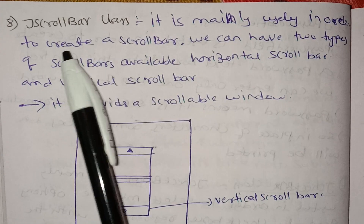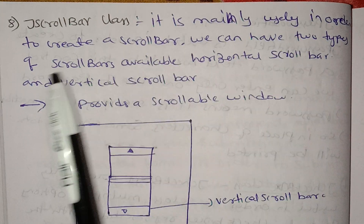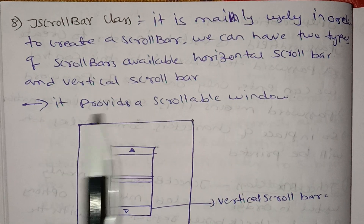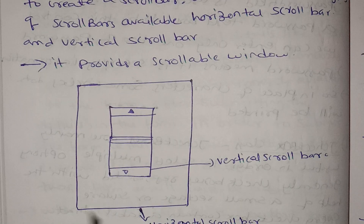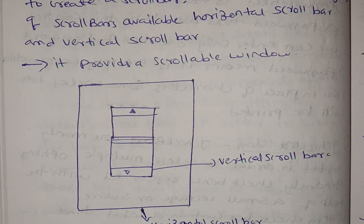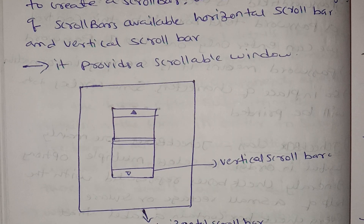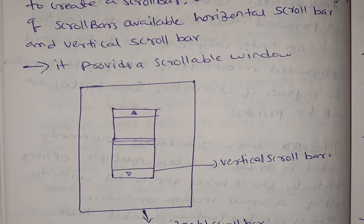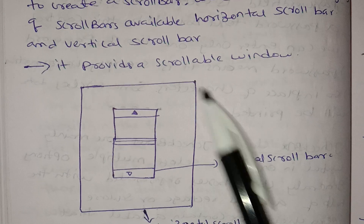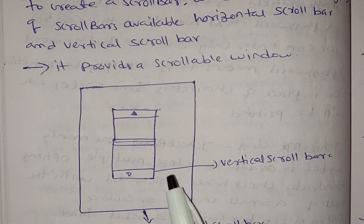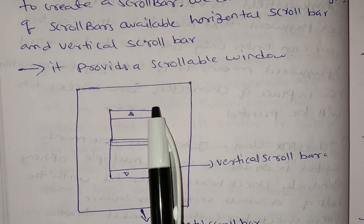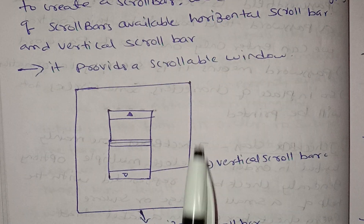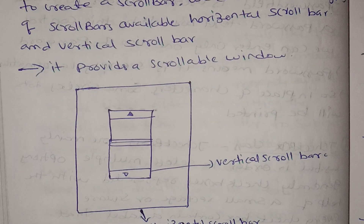Now, the JScrollBar class. It is mainly useful in order to create a scroll bar. We can have two types of scroll bars: a horizontal scroll bar and a vertical scroll bar. For example, when we open a PDF in a window, we use these scroll bars to navigate.